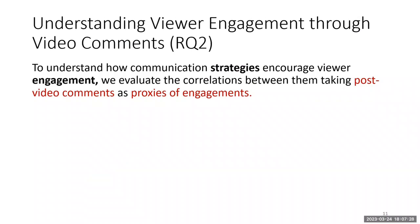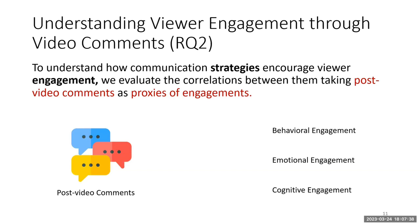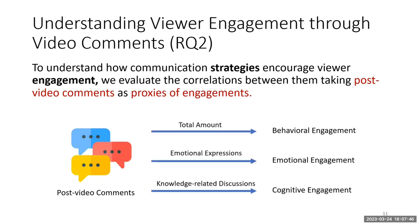To understand how communication strategies encourage viewer engagement, we evaluated the correlations between them, taking post-video comments as the focus of engagement. Inspired by previous research, we divided viewer engagement into three types: behavioral engagement, emotional engagement, and cognitive engagement. Behavioral engagement can be inferred by the total amount of post-video comments. Emotional engagement can be inferred by the proportion of comments with explicit emotional expressions. Cognitive engagement can be inferred by the proportions of several types of comments relevant to science knowledge and discussion.